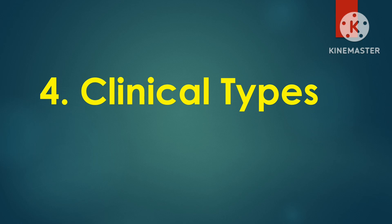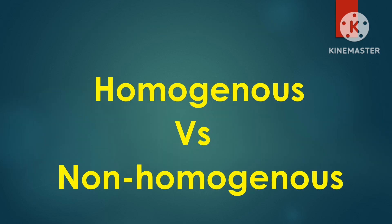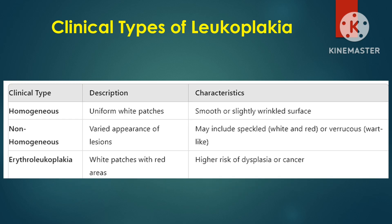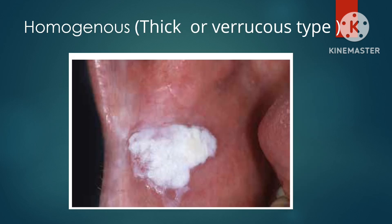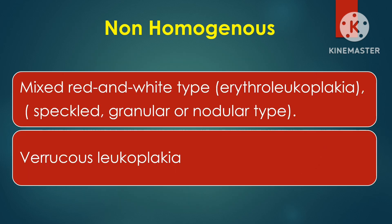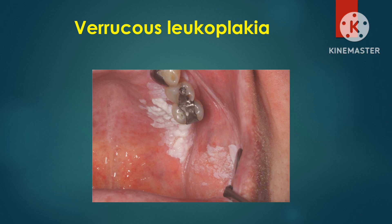Oral leukoplakia can be classified into two main types based on clinical appearance: homogenous and non-homogenous. These distinctions are important because they help assess the potential risk of malignancy. Homogenous leukoplakia presents as a uniform, flat, thin white plaque with a smooth or slightly corrugated surface, lacking any areas of redness or ulceration. Non-homogenous leukoplakia is more irregular in appearance and may present as a combination of white patches interspersed with red patches — also known as erythroleukoplakia — and the surface may also be nodular, verrucous, or ulcerated.